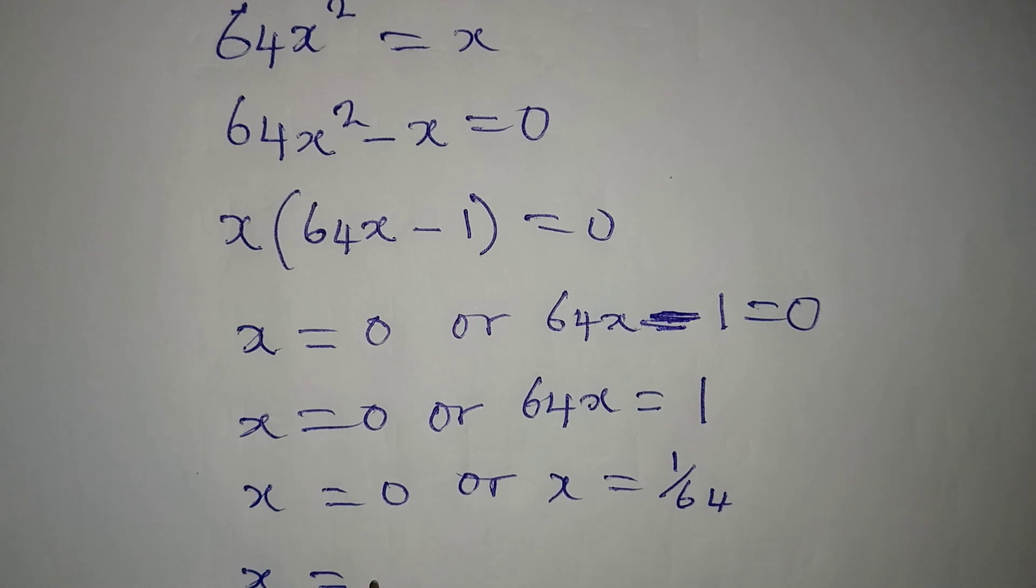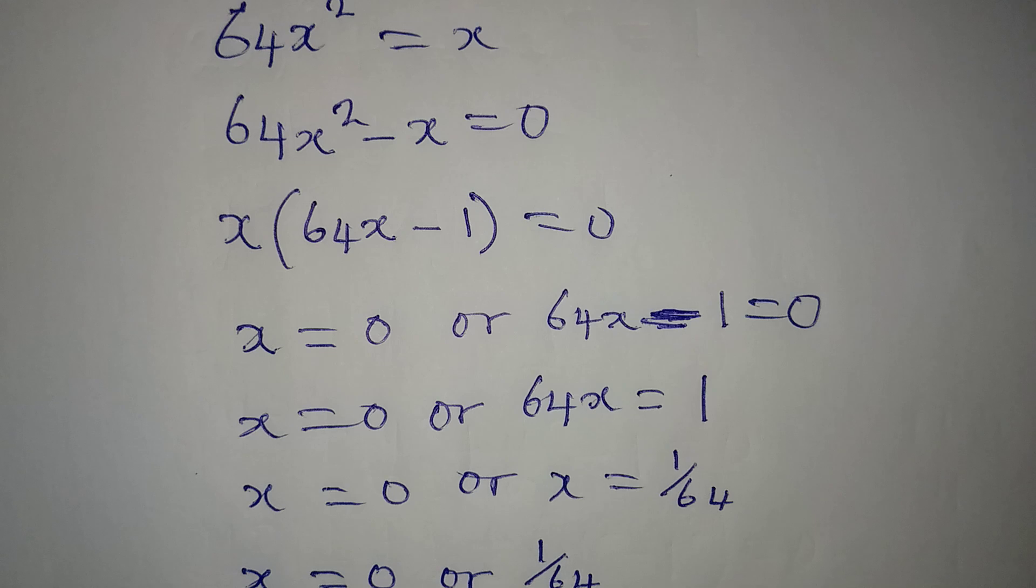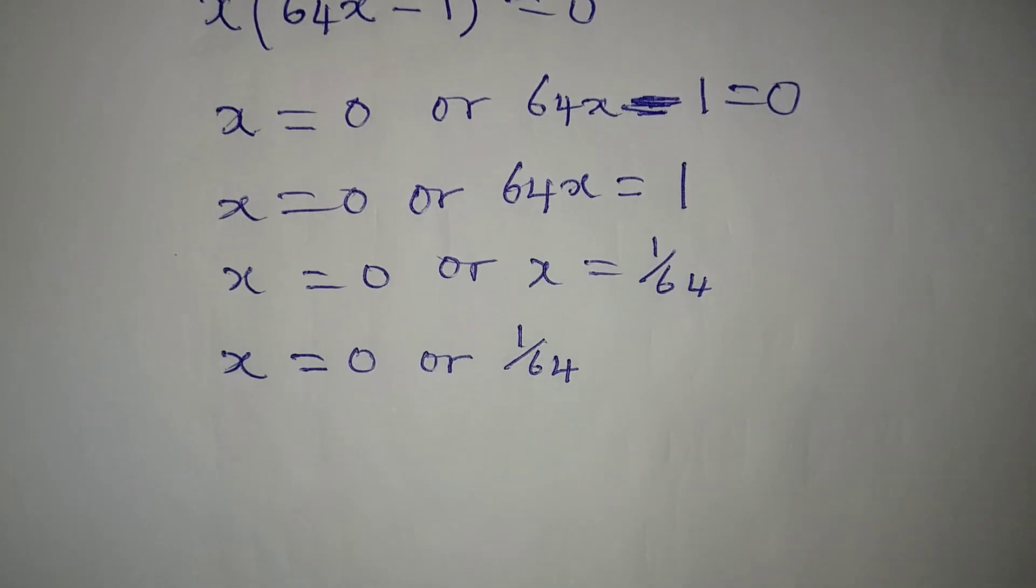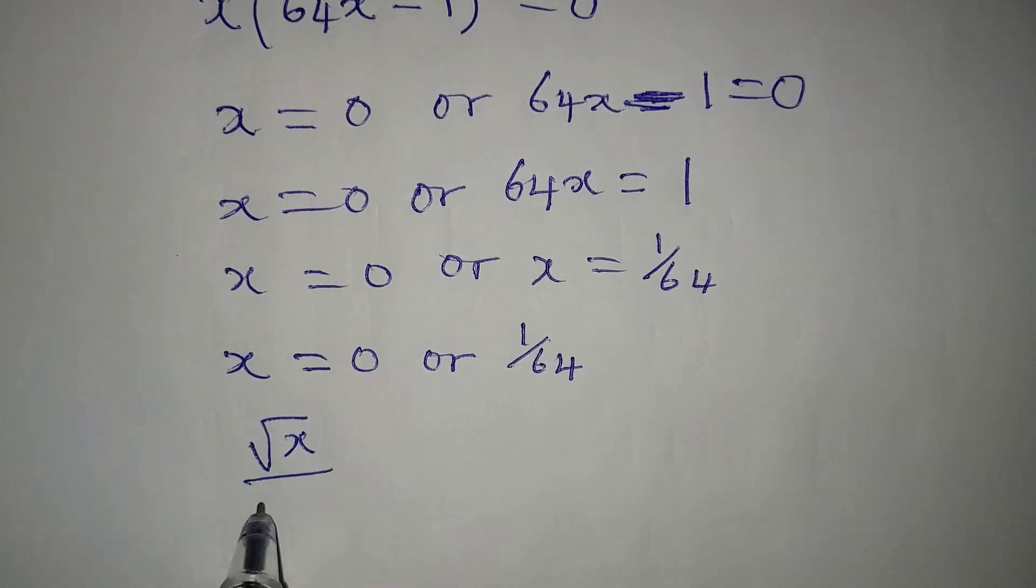So the two values of x are 0 or 1 over 64. Now let's put these two values of x into the original equation, which is square root of x over 2x, and it is equal to 4.